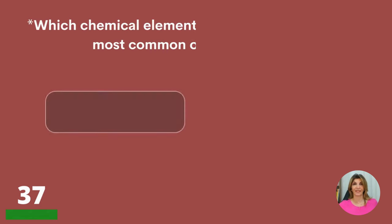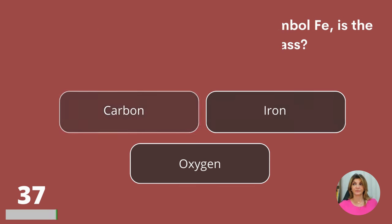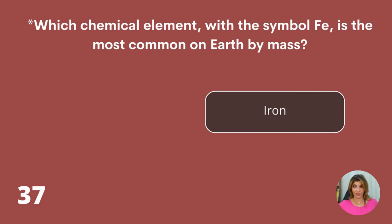Which chemical element with the symbol Fe is the most common on Earth by mass? Carbon, iron, or oxygen? Iron.